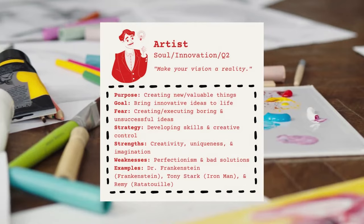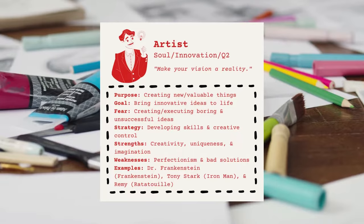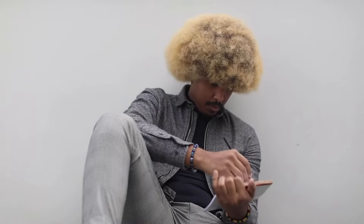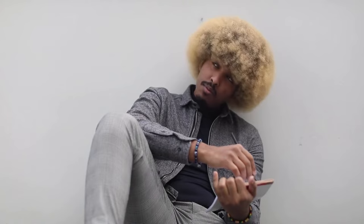Moving on to quadrant two, we have the artist, the ruler, and the caregiver. The artist is a soul-type archetype that believes creating order and structure requires one to be innovative. Their purpose is creating new and valuable things. These characters bring their innovative ideas to life and fear creating boring and unsuccessful ideas. To avoid this, they develop their skills and creative control. They are creative, imaginative, and unique, but can fall victim to perfectionism and stubbornly following through with bad ideas. Famous artist characters include Dr. Frankenstein, Tony Stark, and Remy.